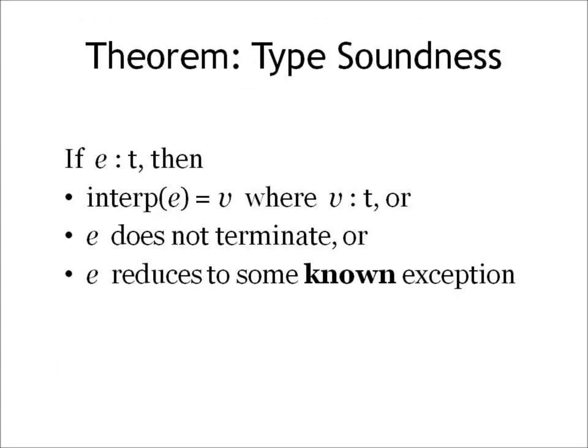So to summarize, this is what a type soundness theorem tells us. If E has some type T, then either it's going to produce a value, in which case we know what type the value is going to be, it's going to be T, or E doesn't terminate, but preservation will tell us that we have something that's computing of the same type all along, or E reduces to some known exception. And the exceptions that are not listed in this set, we don't need to worry about. That's a very powerful guarantee indeed, and that's why we'd like to insist that when we work with a type system, we only work with sound type systems.